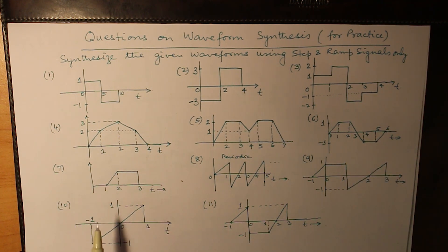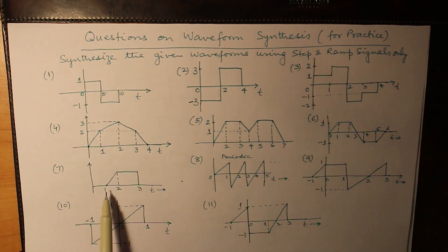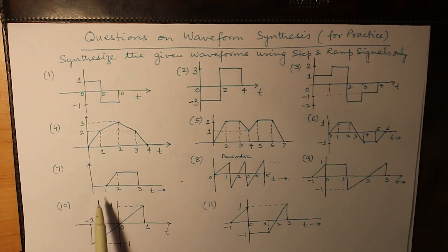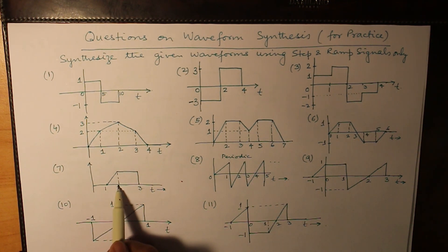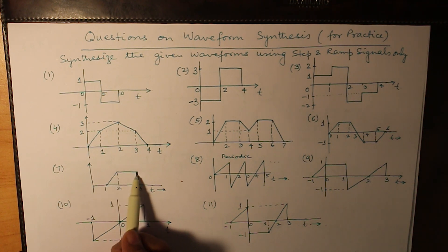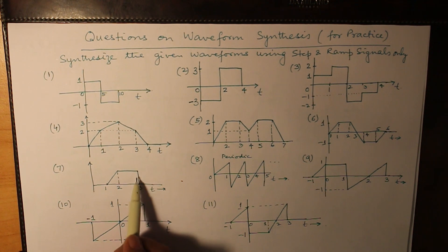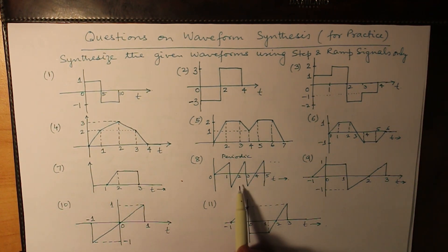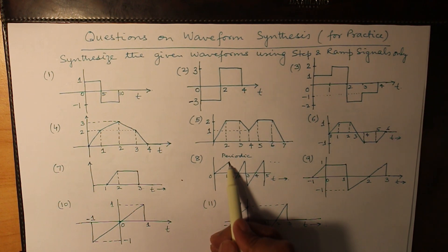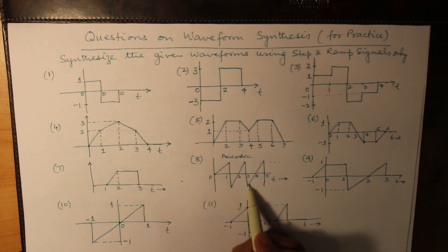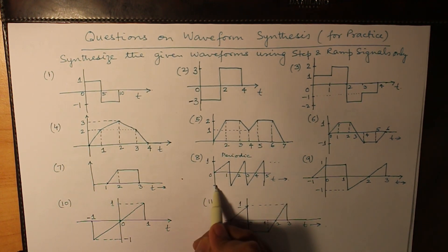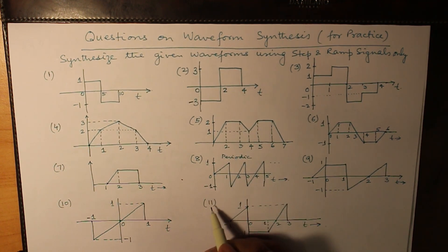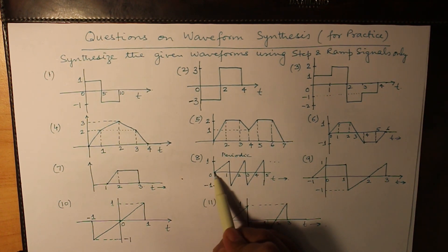Now we come to questions 7, 8, and 9, which involve a combination of step signals and ramp signals. In question 7, a ramp signal starts at t equals 1; at t equals 2, another ramp signal makes the signal flatter; then there is a sudden change in magnitude — a step signal. So there is one step signal and two ramp signals. In question 8, check the slope of the three line segments — they are the same. So after one ramp signal at t equals 0, the remaining terms are step signals only.